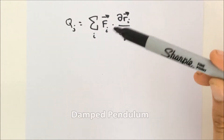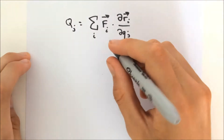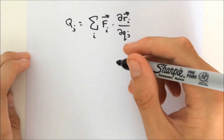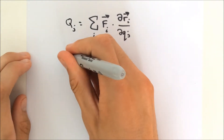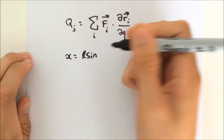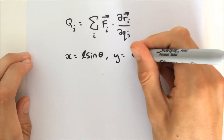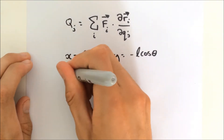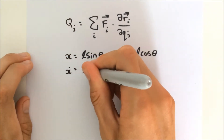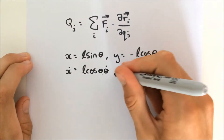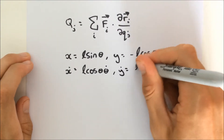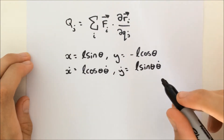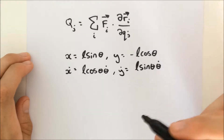Now let's look at the damped pendulum. It has a length L, and we're going to use the angle theta from the vertical to describe the single degree of freedom. The position of the bob will be given by x equals L sine theta and y equals negative L cosine theta. Differentiating to find the velocities: x-dot equals L cosine theta times theta-dot, and y-dot equals L sine theta times theta-dot. The viscous force opposes the direction of motion and is proportional to the velocity.